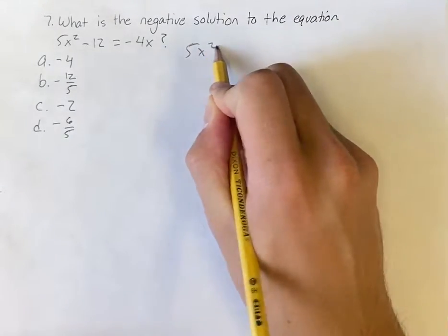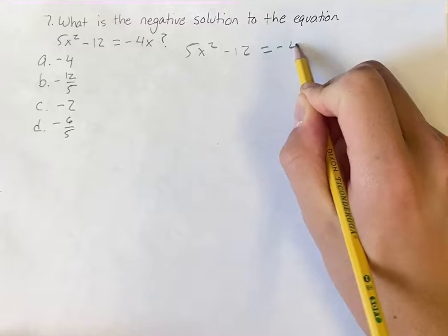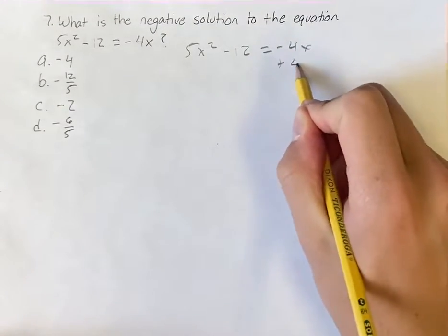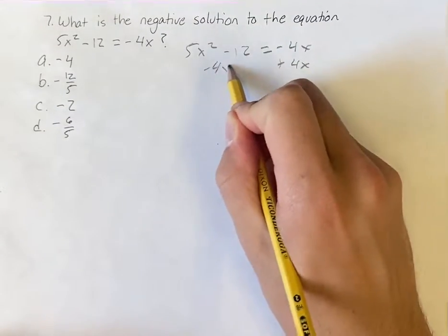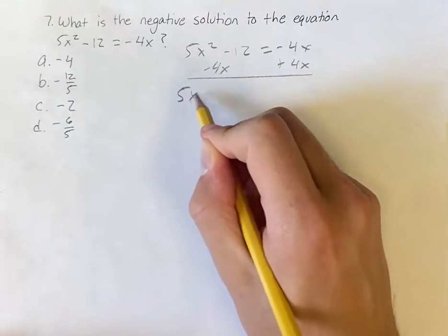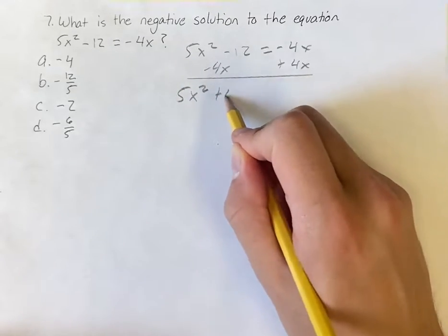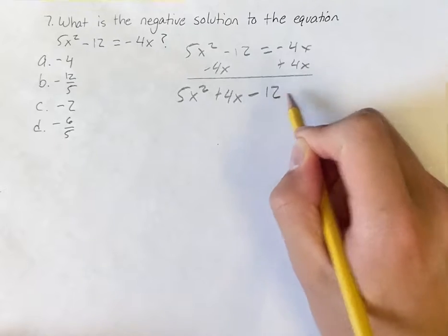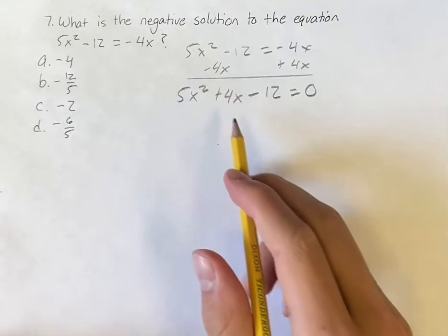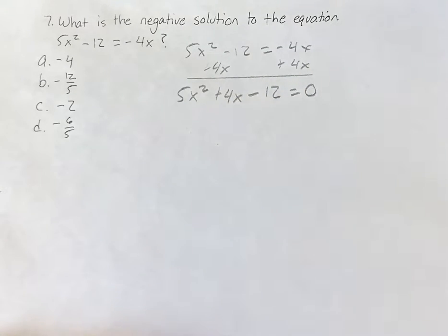If you write this down right here, and bring this 4x over, I'm going to get a familiar form, right? Where we have ax squared plus bx plus c is equal to 0. We have an x squared, an x term, and a constant, and then we're going to have that equal to 0.